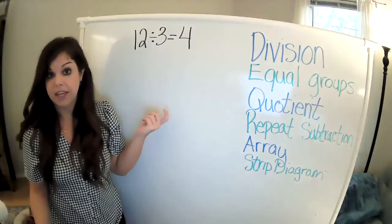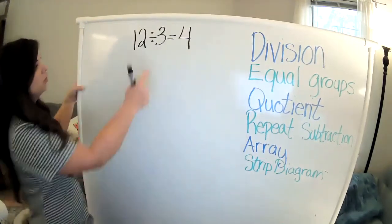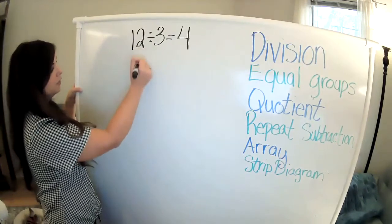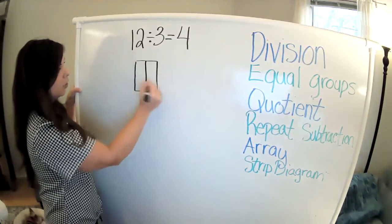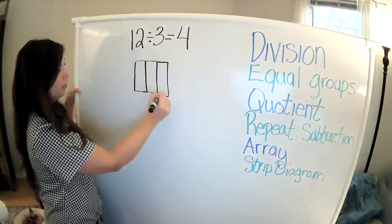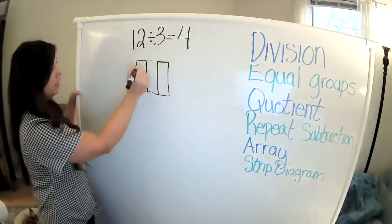We could also do something called an array. So I could do three groups. Here's my first group. Here is my second group. And here is my third group. And I need to show that there are four in each group.